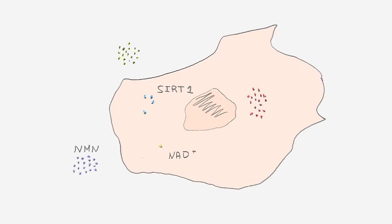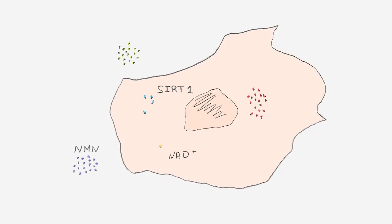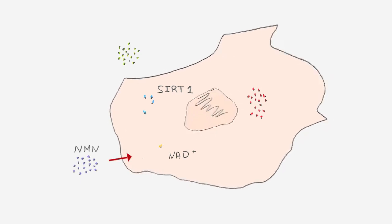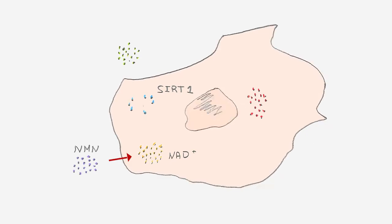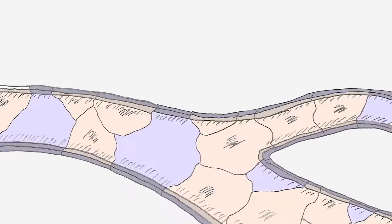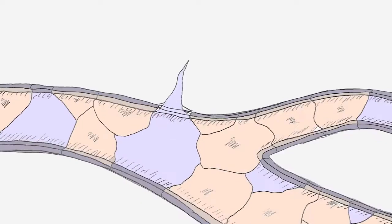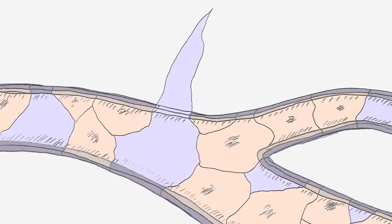In our new study, we gave mice NMN, a chemical compound commonly found in the body and previously shown to boost NAD levels, which in turn boosts SIRT1. These mice had better endothelial function, blood vessel growth, and improved blood supply to their muscles.